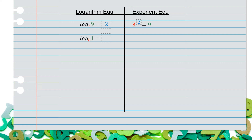Now let's look at log base 6 of 1. What does that really mean? It means 6 raised to some power equals 1. Do you remember your rules of exponents? Recall, anything raised to the power of 0 equals 1. So that means 6 must be to the power of 0 for it to equal 1. So log base 6 of 1 equals 0, the power.